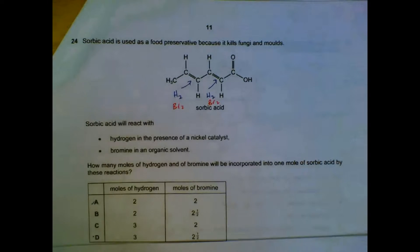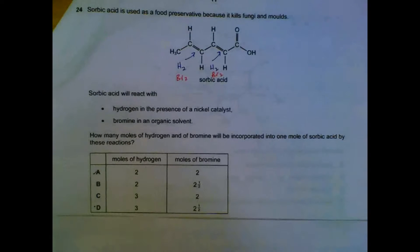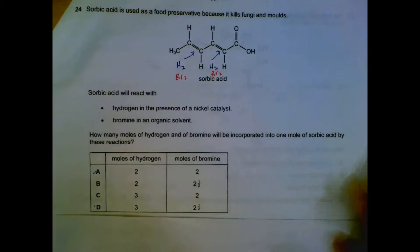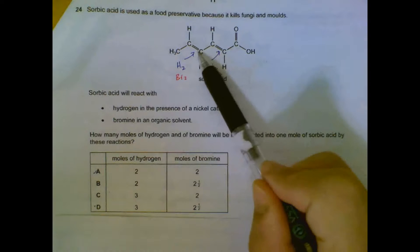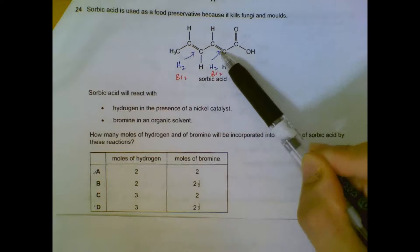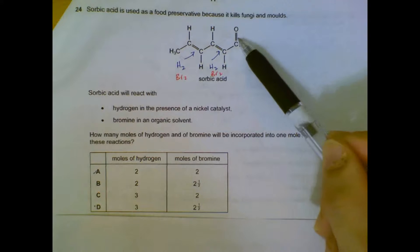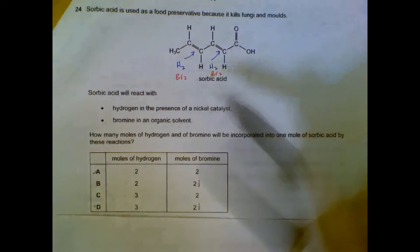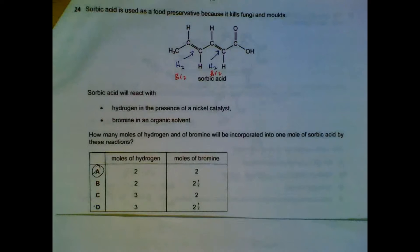Question 24. How many moles of hydrogen and bromine will be incorporated? We check at the double bonds. Hydrogen and bromine can be incorporated here. So 1 mole here, and this double bond will also have 1 mole. This is an acidic group, the C double bond O. It will not be affected by hydrogen or bromine. So we have a total of 2 moles of hydrogen, 2 moles of bromine.